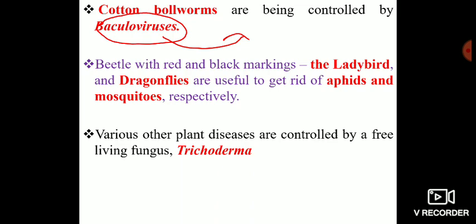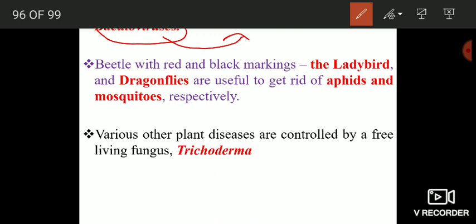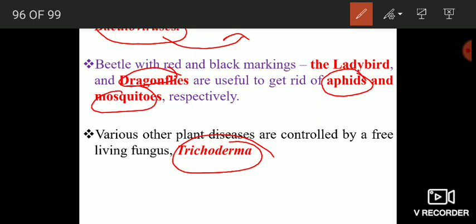Ladybird beetles — beetles with red and black markings — and dragonflies are also useful biocontrol agents: ladybird beetles are used to control aphids, and dragonflies are used to control mosquitoes. Additionally, Trichoderma can be used to control a wide range of plant diseases in crop fields.